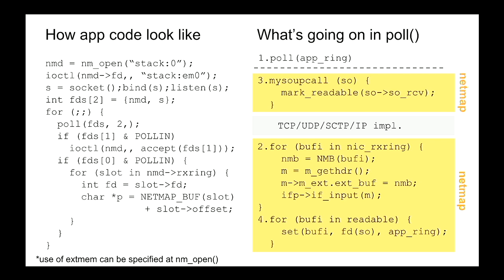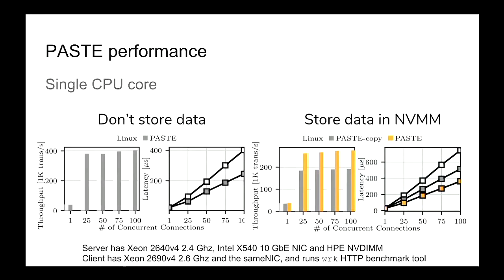Here are the performance results on a single CPU core. On the left is the case without storing data — compared to normal Linux, PACE achieves about 50% performance improvement with reduced latency. When storing data to NVM using memory copy, we see about 30% improvement. But when we directly DMA data into NVM, we get 50% or more improvement over Linux — the orange bar. This is pretty good.